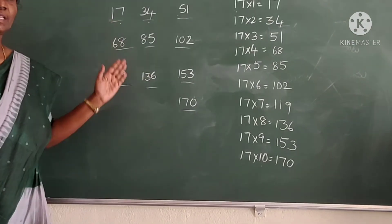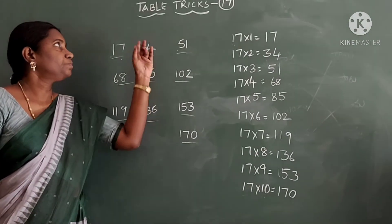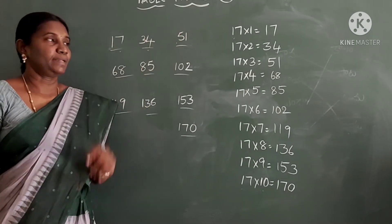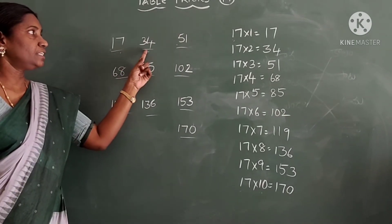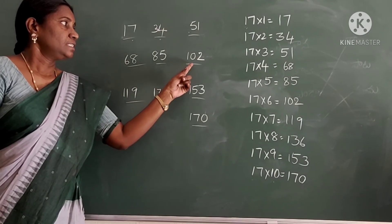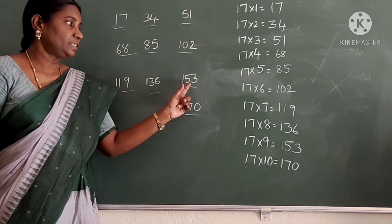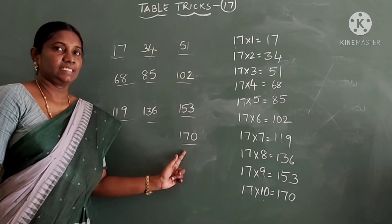So this is very simple and a trick to learn 17 table. 17×1, 17×2, 17×3, 17×4, 17×5, 17×6, 17×7, 17×8, 17×9, and 17×10 is 170. So hope you all learned easily the 17th table.